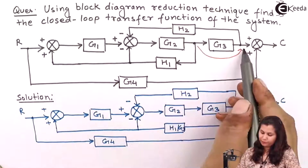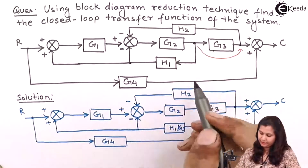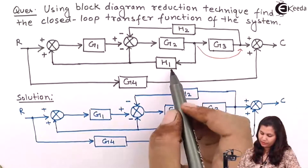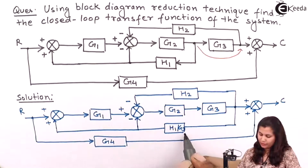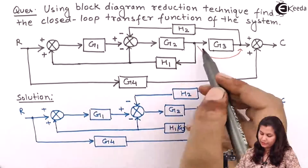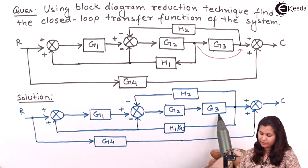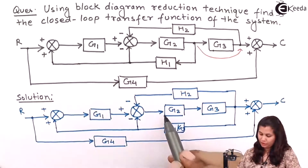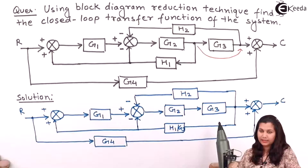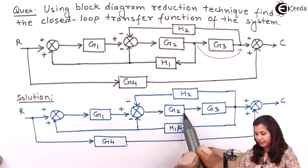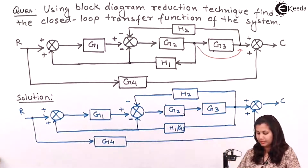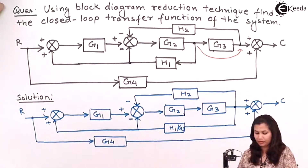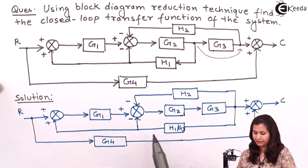We have shifted this takeoff point and G3 is divided from H1, so we are getting H1 by G3 here, and G2 and G3 have come in series. So we can multiply these transfer functions — that is G2 times G3 — and there will be a single block. Let's apply the series combination rule.